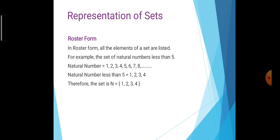In roster form, all the elements of a set are listed. For example, the set of natural numbers less than 5. Natural numbers are 1, 2, 3, 4, 5, 6, 7, 8... What we need is the set of natural numbers less than 5. So natural numbers less than 5 are 1, 2, 3, 4. Therefore, the set N = {1, 2, 3, 4}. It is listed — this is roster form.